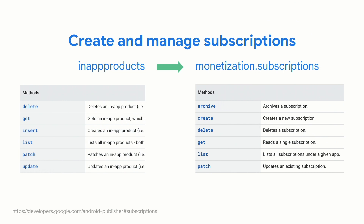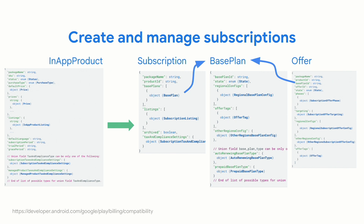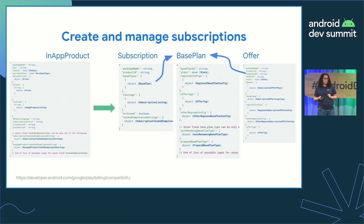If you currently use the in-app products endpoint for managing your subscriptions catalog, you should start using monetization.subscriptions. The new endpoint uses create instead of insert, patch for all updates, and introduces the capability to archive a subscription. The in-app products endpoint still works for one-time purchase products, and you can still use it for converted subscriptions that have not been made editable. The new resources adopt the same hierarchical structure with subscriptions, several base plans, and potentially several offers. To see how these new resources map to the old in-app product resource, check the May 2022 Subscription Changes Guide in the documentation.